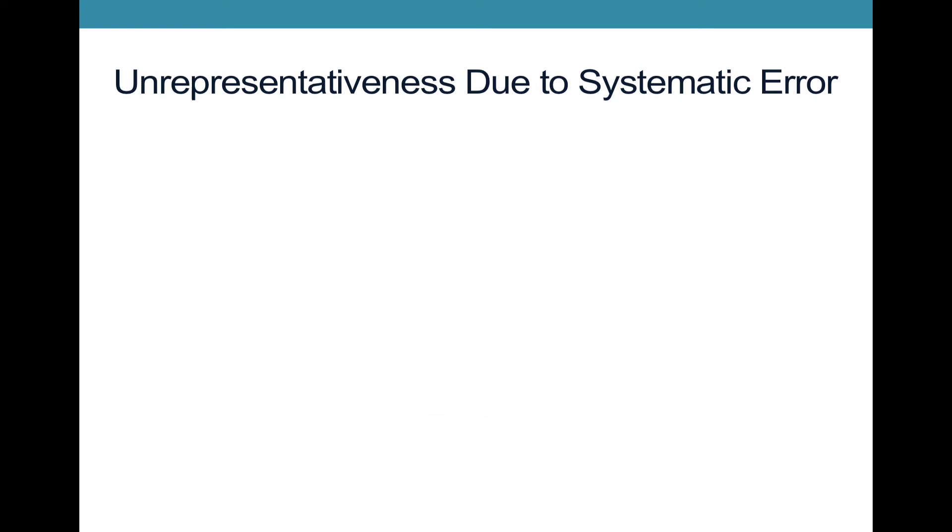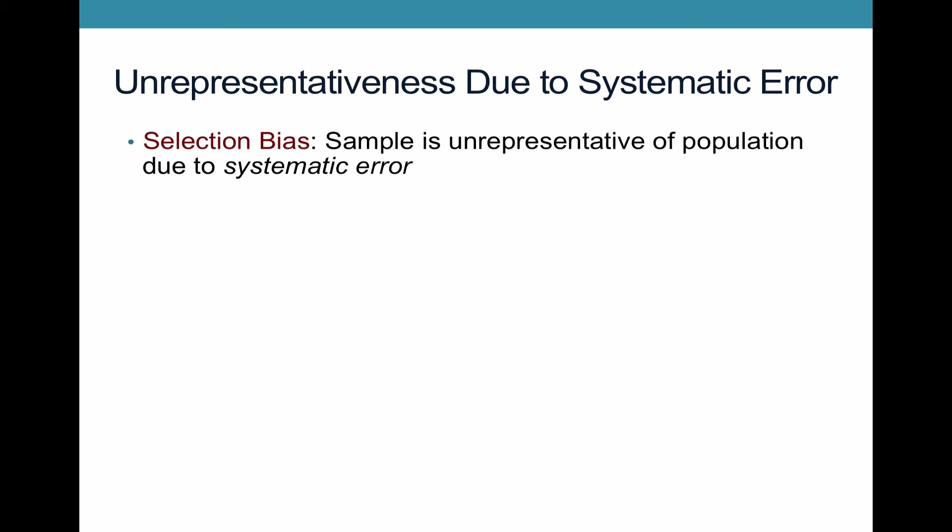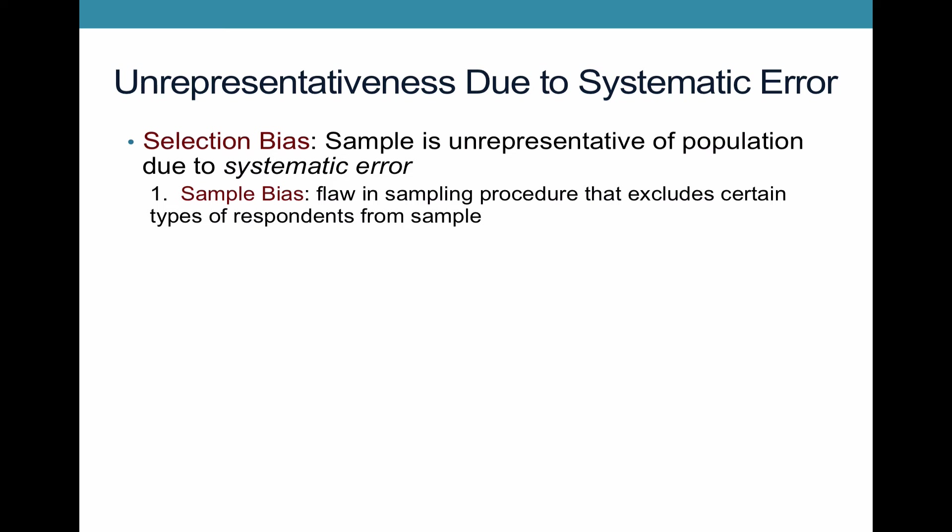In contrast to unrepresentativeness due to chance, you could also have unrepresentativeness due to some sort of systematic error — some kind of bias. This is called selection bias, where your sample is unrepresentative of the larger population due to a systematic error in who is included. I'm going to talk about two different forms of selection bias. The first is called sample bias. The word 'bias' here means there's a systematic error going on — it's not a chance fluke but bias in a direction.